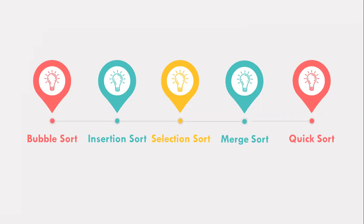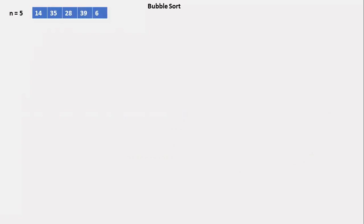Now let us see how bubble sort works. We take an unsorted array of five elements: 14, 35, 28, 39, and 6. Bubble sort starts with the very first two elements. Since n equals five, it takes order n squared time. First, 14 and 35 are compared. Since 35 is greater than 14, they are already in sorted order.